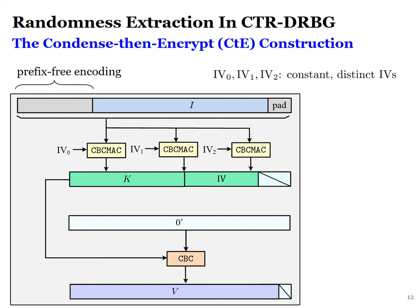For the rest of the talk, I will elaborate more on randomness extraction in Counter-DRBG, namely the CTE construction. This picture is a blueprint of CTE. Given an input I, it will add some prefix-free encoding and padding. It then iterates through CBC-MAC up to three times with different constant IVs. The resulting ciphertext tag is then parsed into a key and an IV of AES. We use this key and IV to encrypt a zero string under CBC mode, and the ciphertext tag is the extracted output string.